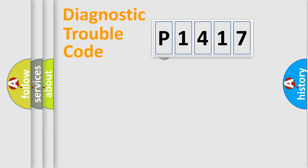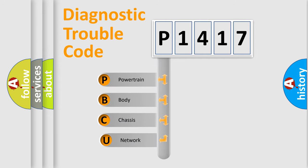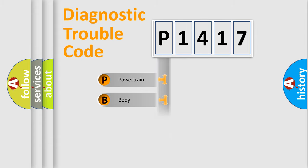First, let's look at the history of diagnostic fault code composition according to the OBD2 protocol. We divide the electric system of an automobile into four basic units: powertrain, body, chassis, and network.